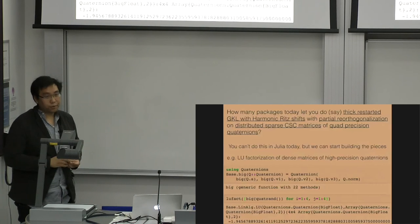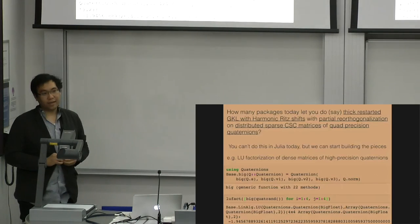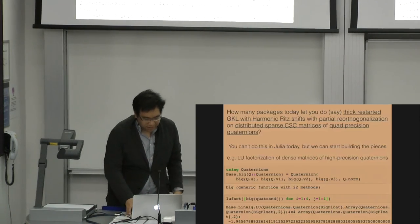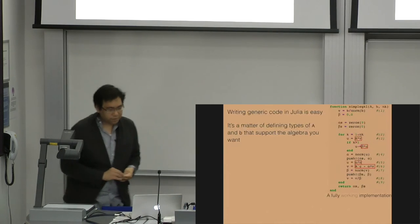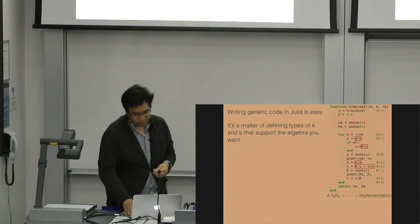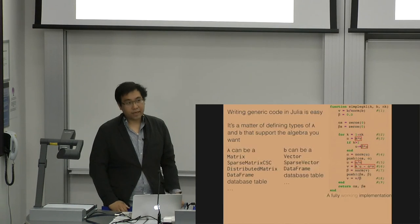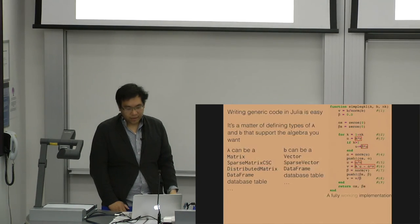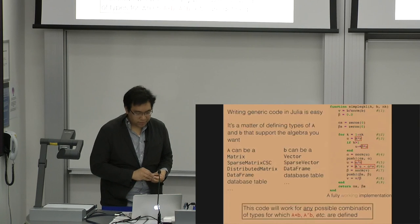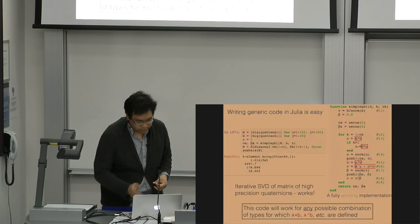You can't do this in Julia today anyway, but you can start doing things that will get you there. For example, you can do things like LU factorizations on high-precision quaternions. All you have to do is define your quaternion class and how to turn it into a high-precision quaternion. And then this LU factorization will simply work and give you this horrendously large number. Writing generic code really is about just writing the code you want. You want to write A times B. You want to write A minus B and so on and so forth. And then you just define the algebra that you want as the interface. And you've seen how we can simply extend times and minus and so on in Julia. These are just names of functions. And these can just be new definitions for what you need to do. And this code will work for any combination of types for which these particular operations are defined.